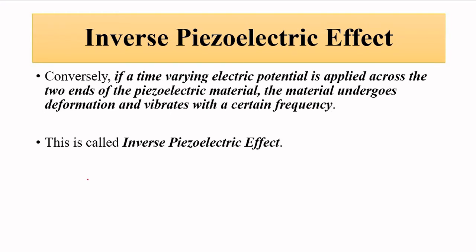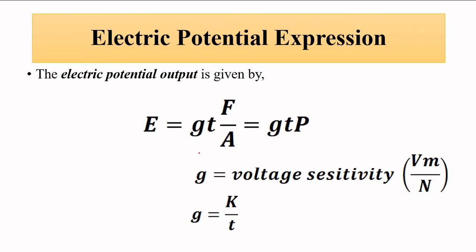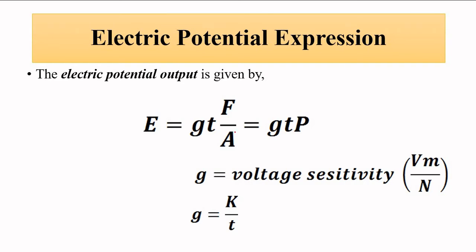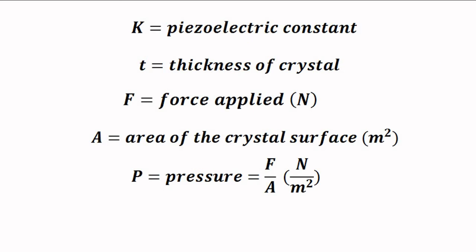The mathematical relationship between the electric potential output across the electrodes and the input force or pressure is given by: E = g·t·p, where E is the electric potential output, g is the voltage sensitivity of the sensor, t is the thickness of the crystal, and p is the applied pressure, which equals force divided by area A, where A is the area of the crystal surface.